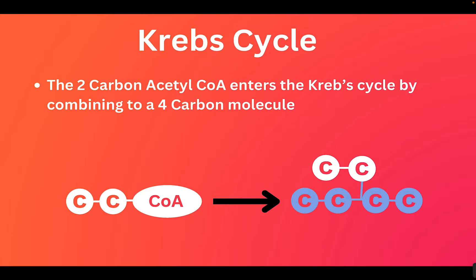To enter the Krebs cycle, this two-carbon acetyl-CoA is going to combine with a four-carbon molecule. We lose the coenzyme and now we have a six-carbon structure that's going to go through the cycle. There are hydrogens and oxygens that are going to play roles from the original glucose, but for simplicity's sake, we're going to focus on the carbons.